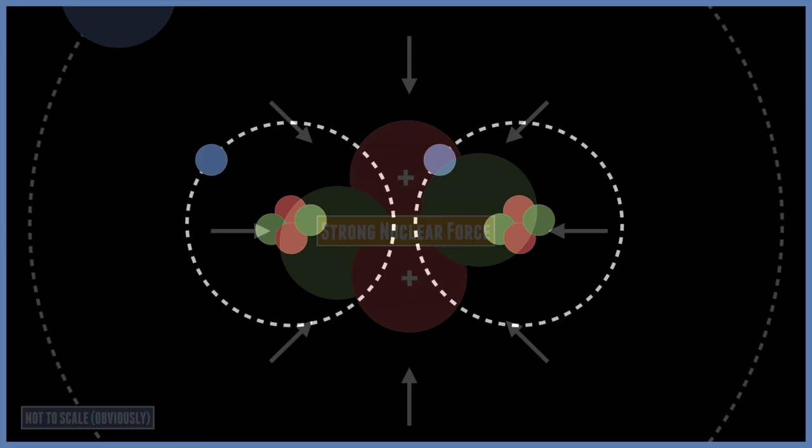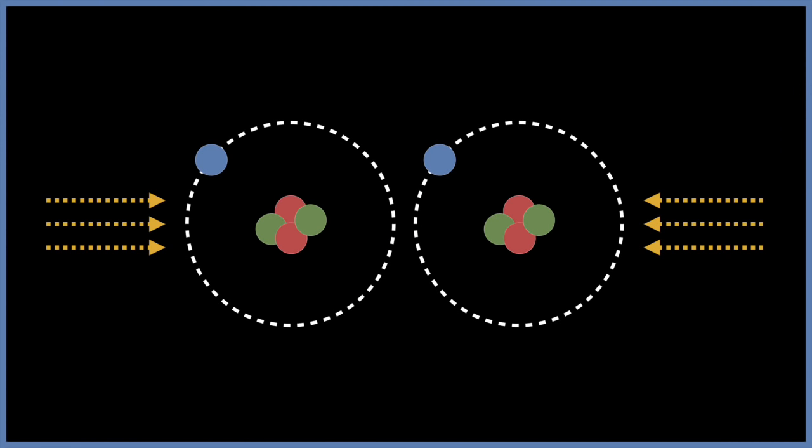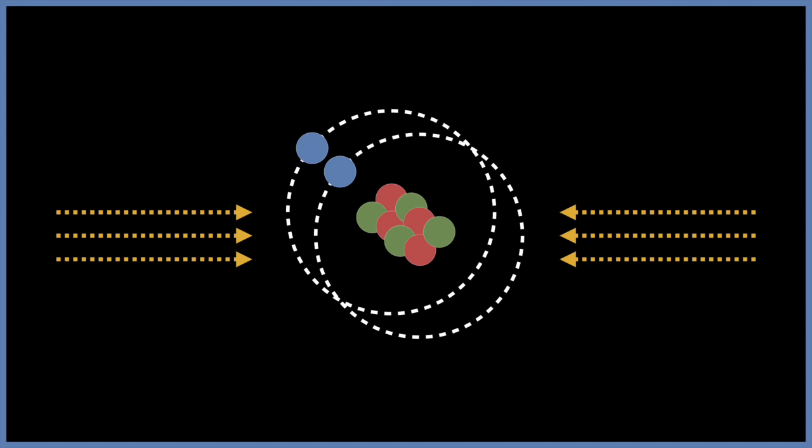But this only happens if two protons are brought very close together. And the only way to get protons in different atoms close together is that the strong nuclear force must overcome the electromagnetic force. This means that it allows two nuclei to stick together. This basically looks like the two atoms have collided at very high speeds.